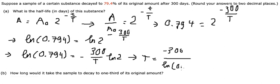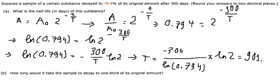We put T on the left and this one will go to the right, so we have negative 300 over ln of 0.794 multiplied by ln of 2. Using the calculator, we have the final answer 901.47. The question says round your answer to two decimal places, and here is the answer we need. We put days.